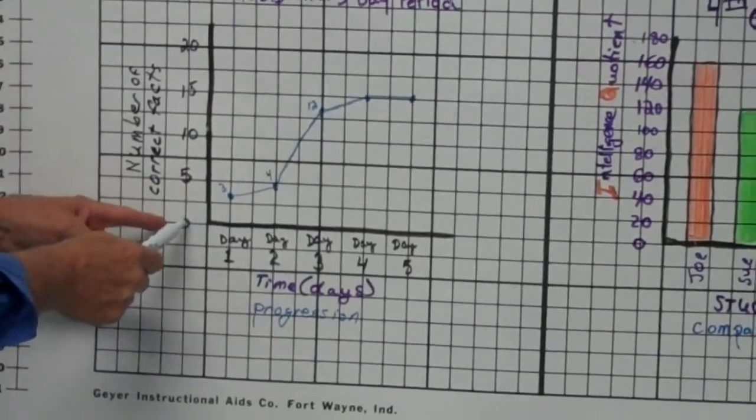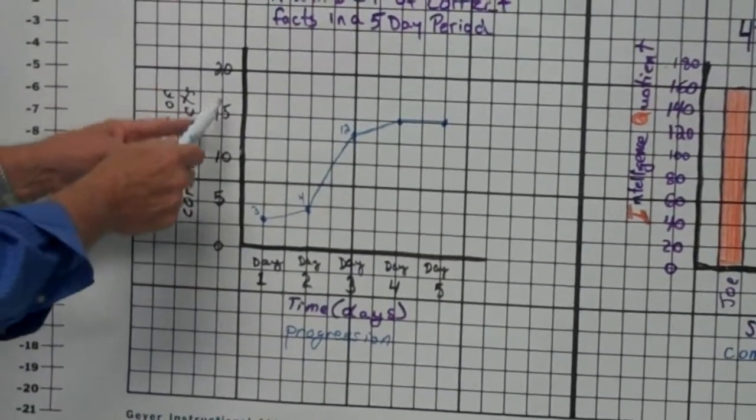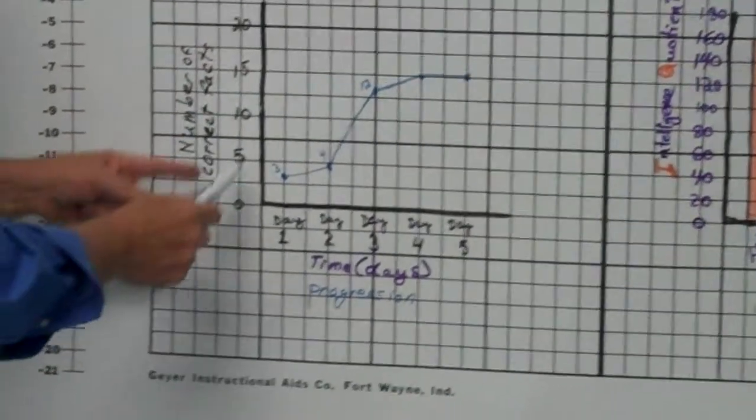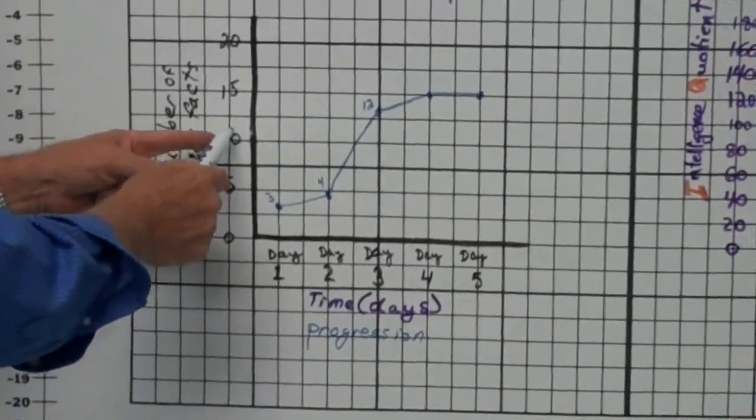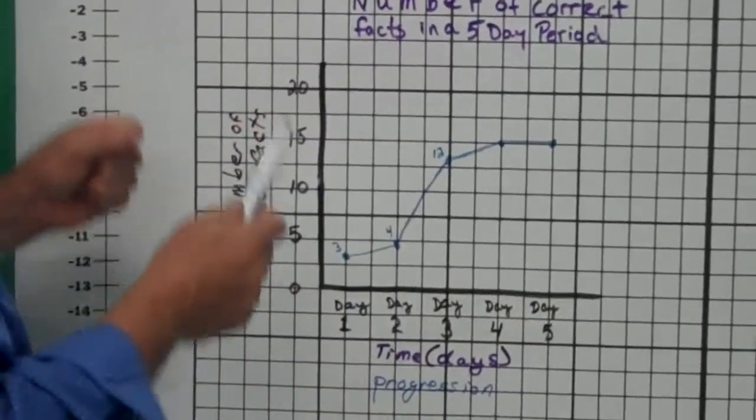Here we have the number of correct facts. And you notice the intervals are five, ten, fifteen, twenty. We can't go five, seven, ten, eleven, a hundred and fifty, and so on.